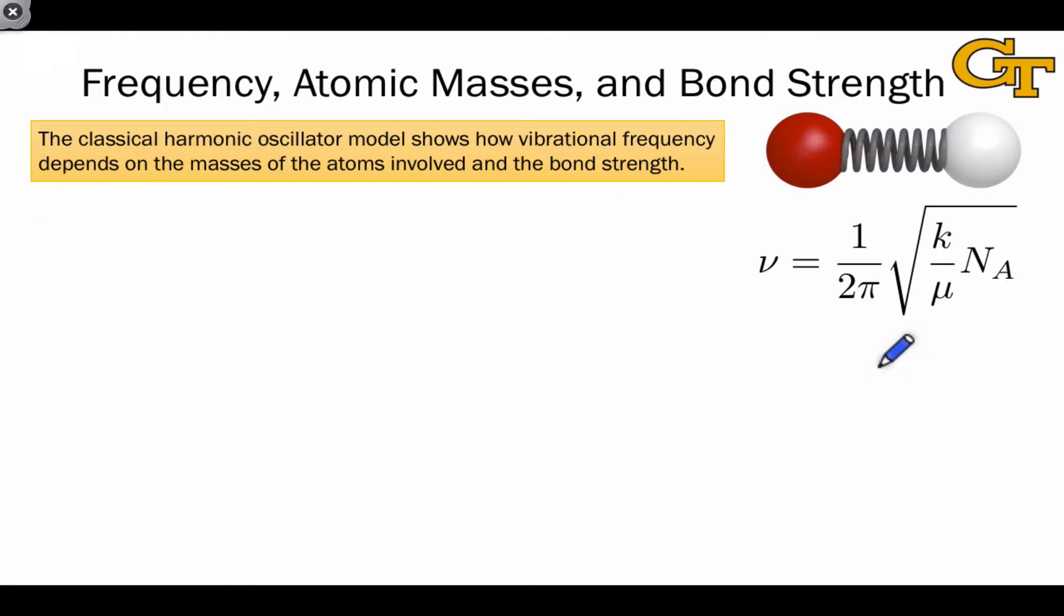Let's unpack this equation a little more to understand how the vibrational frequency for a particular bond depends on the masses of the atoms involved and the bond strength. The strength of the bond in this equation is captured by k, the force constant. As the bond strength increases, k increases. Because k increases, the vibrational frequency increases, not linearly, but as the square root of k.